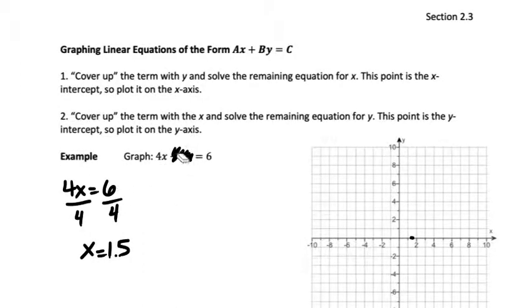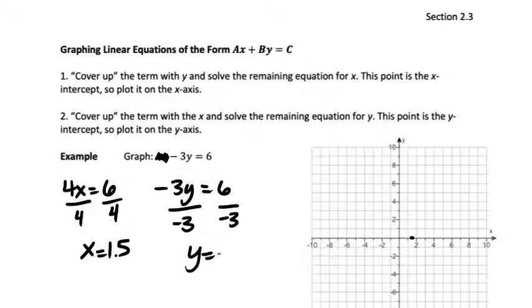Now, I'm going to do the same thing, but cover up the term with the x, so I'm going to cover up the 4x. The equation that's left is negative 3y equals 6, and then I get y by itself by dividing, in this case I get y equals negative 2. So I plot negative 2 on the y-axis, and then once I have those two points, I draw in the shape of the line. Or in the case of the MyLabMath, they will draw the line in for you. So that's what that line is going to look like.